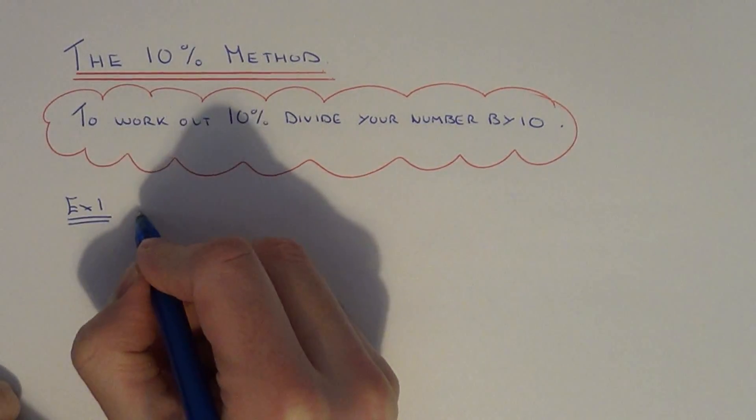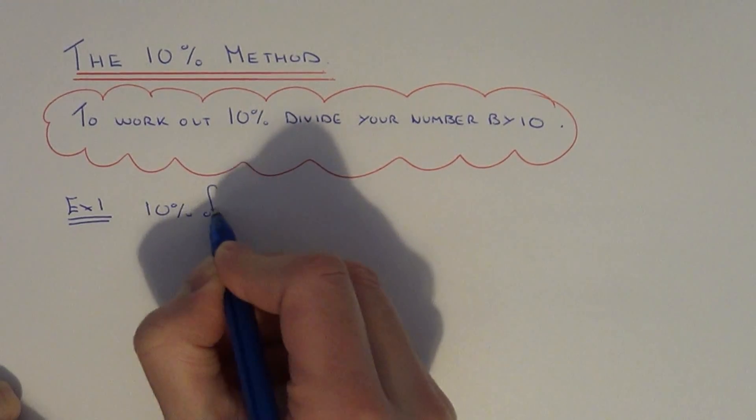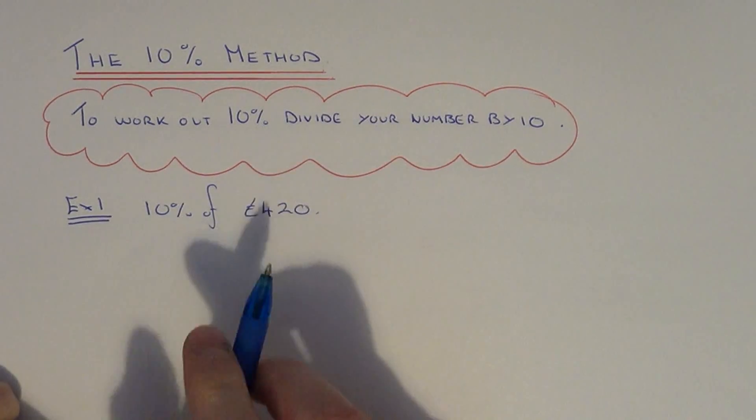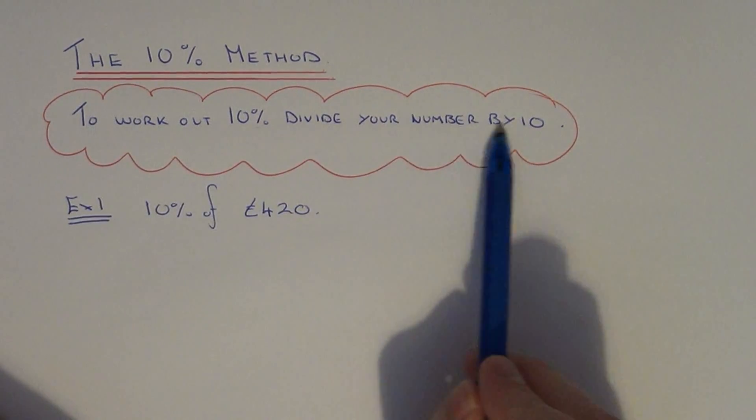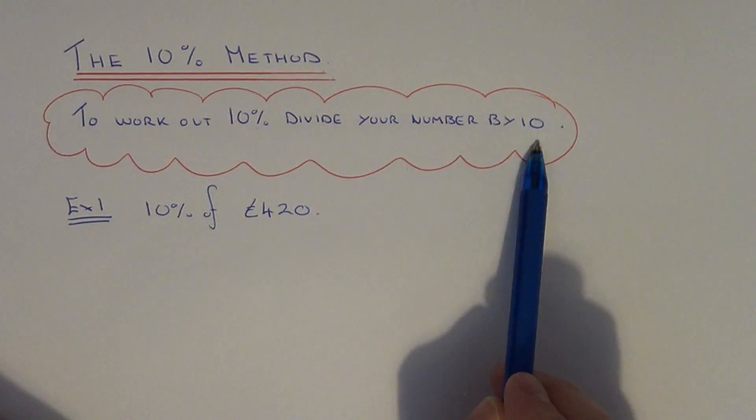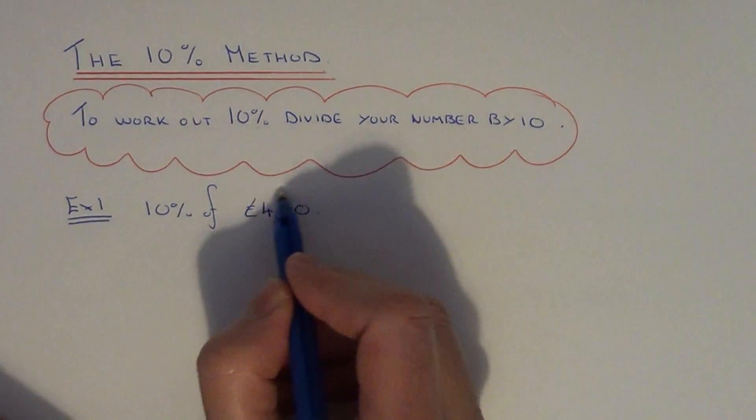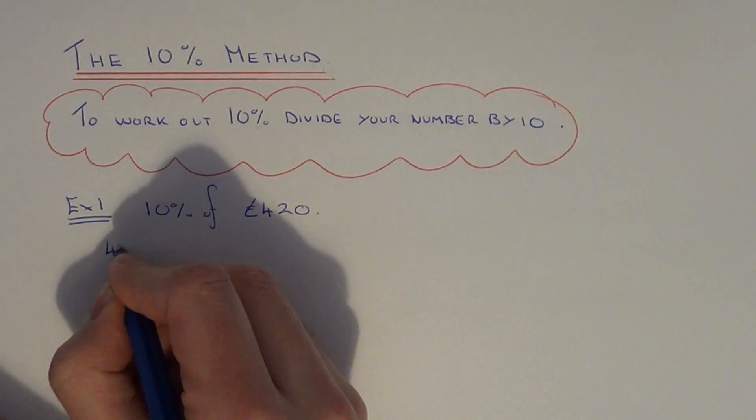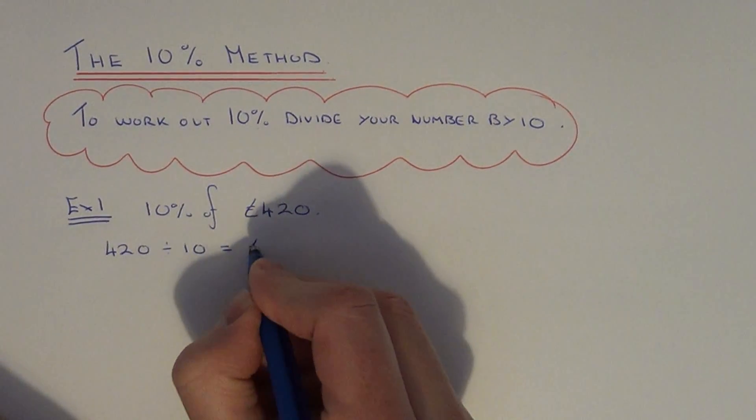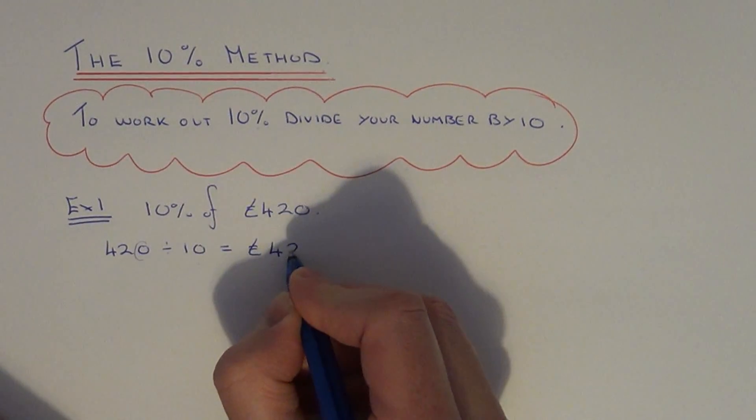So example one, we're going to work out 10% of £420. So if you just read in the bubble, to work out 10% all you need to do is divide the number by 10. So all we have to do is work out 420 divided by 10. Since you've got a zero at the end you can just take this zero off which gives you £42.